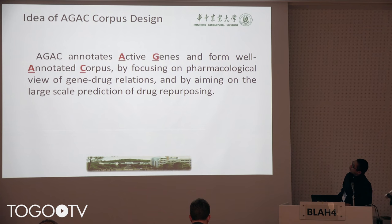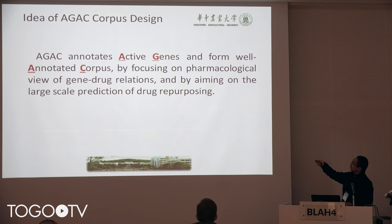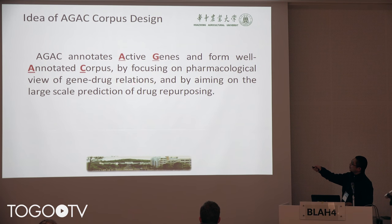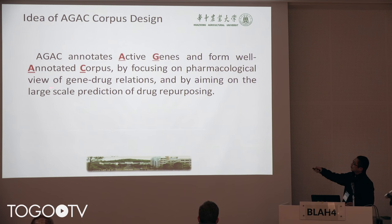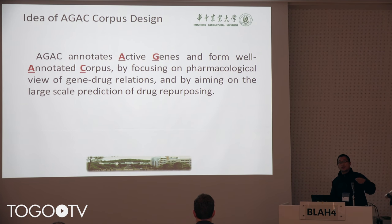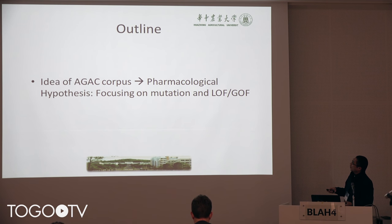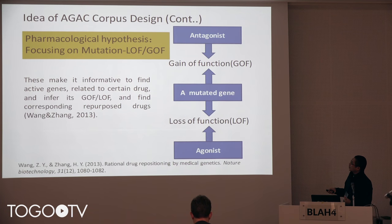The idea of AGAC is to do some annotation for active genes, and we will form an annotated corpus. The purpose is to find the relation between the gene and the drug. But more than that, we like to go a little bit more detailed into the pharmacological view of how drugs could play a function to cure the disease. So here comes our idea.